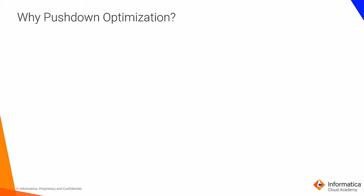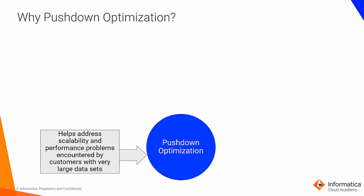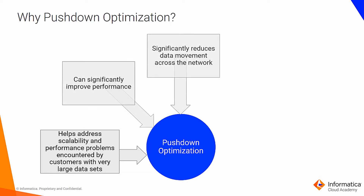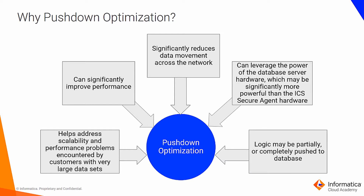Why pushdown optimization? It helps us address scalability and performance problems encountered by customers with very large data sets from data warehouses or databases like Redshift, Oracle, or MS SQL. It provides flexibility to push data transformation processing to the most appropriate resource — whether the source, target, or the Informatica Cloud server. This can significantly improve performance and reduce data movement across the network, and it can leverage the power of database server hardware, which may be significantly more powerful than the ICS secure agent hardware. ICS solution architects can select the database and push the transformation logic partially or completely to the database.